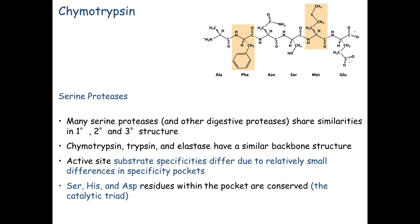Serine proteases do have some differences in their amino acid sequences, and when folded into tertiary structure, there are some differences in the area where the substrate binds — the substrate being another protein, the protein it plans to digest. We'll talk about the slight differences first and then how they're conserved in their mechanism.